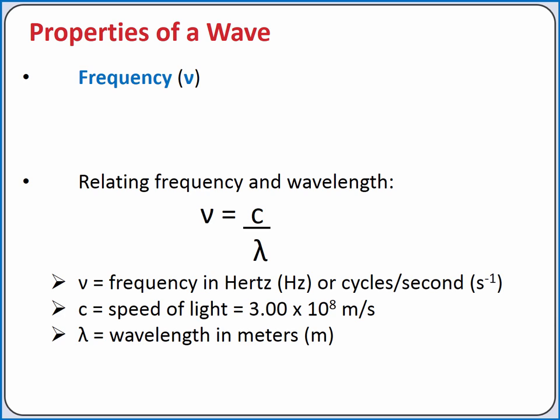A wave also has a frequency. If you're standing still and a wave is propagating through space past you, the frequency is the number of cycles of the wave that pass by you in a given amount of time. Frequency is typically measured in cycles per second, or hertz. Often, the cycles are left out of our units, so frequency is just measured in seconds to the negative first power.